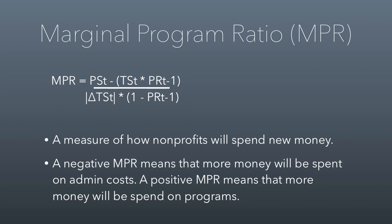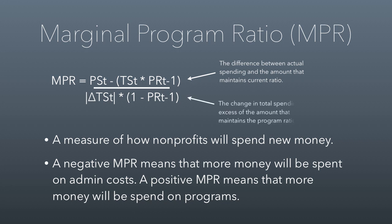The marginal program ratio is basically a measure not of how nonprofits spend their money on average, but how they will spend new money. If the number that results from this equation is negative, it means that more money will be spent on admin costs in the future; if it's positive, it means more money will be spent on programs. The equation is basically dividing the difference between actual spending and the amount that maintains the current ratio by the change in total spending in excess of the amount that maintains the current program ratio.